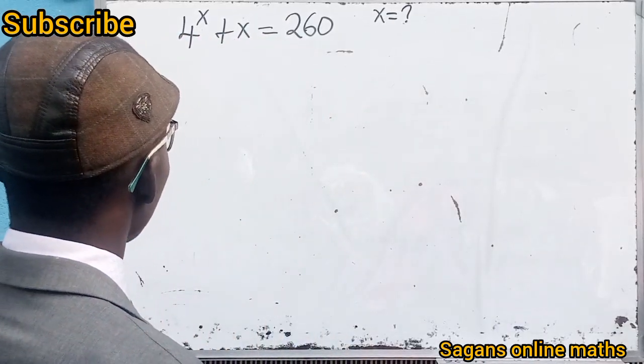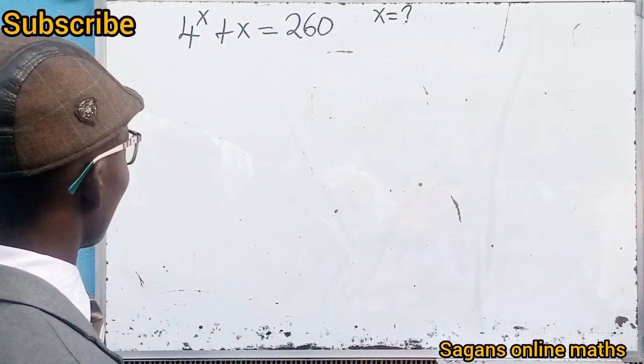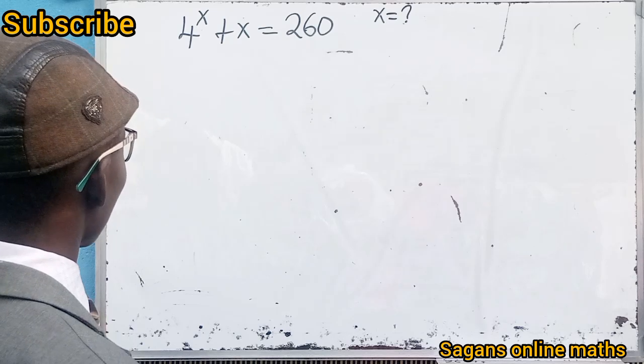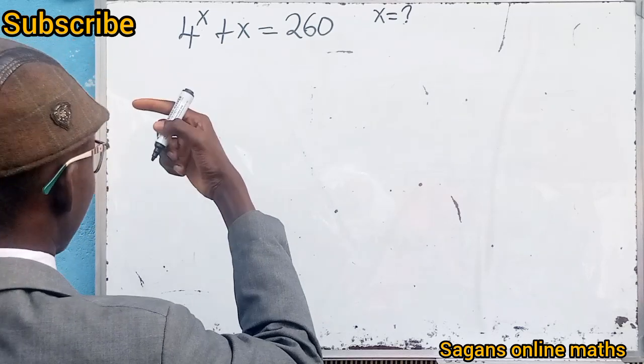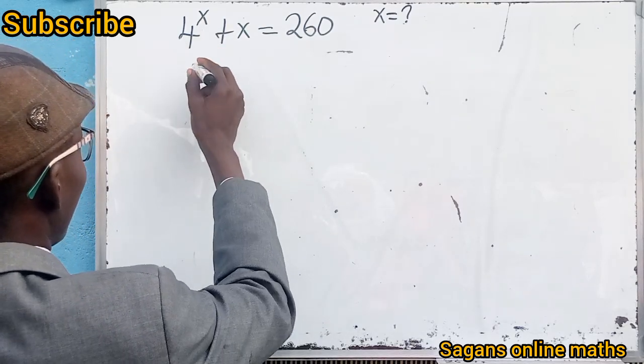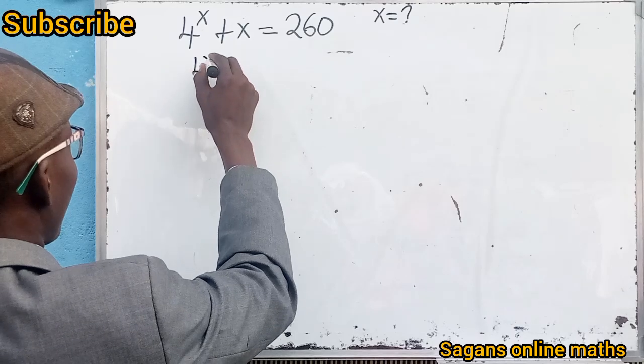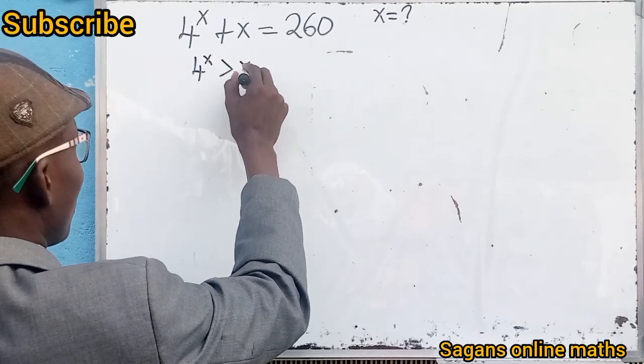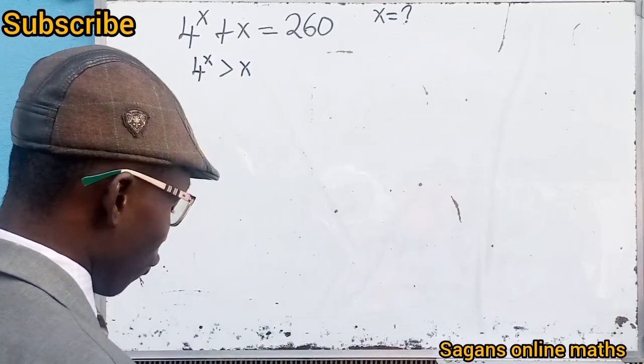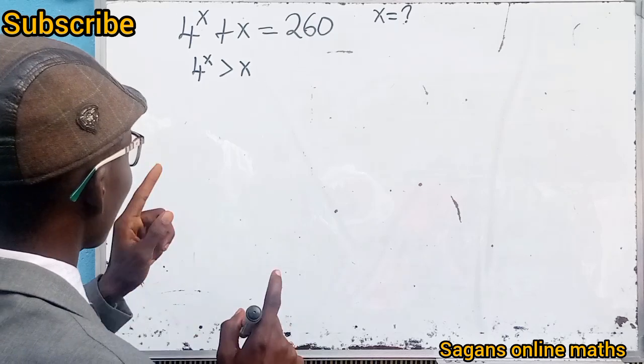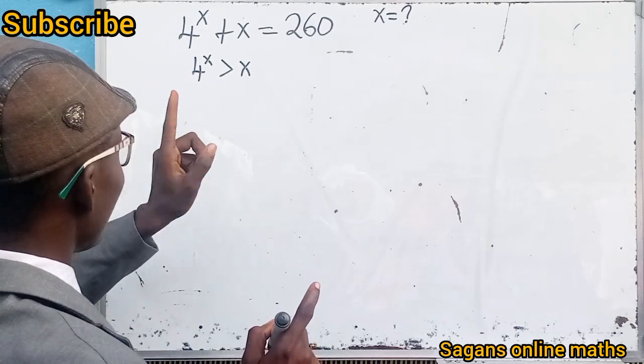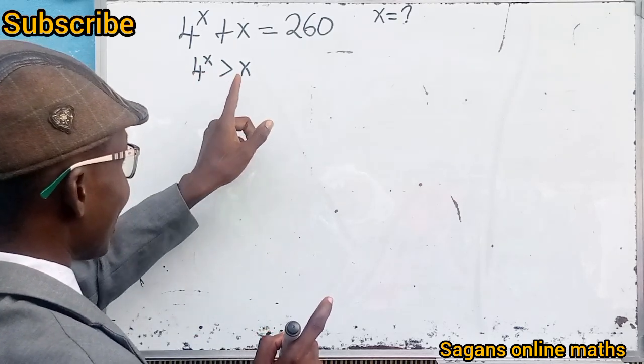I want you to understand something in this video. On this board, I want you to understand that 4 is raised to the power of x. 4 raised to the power of x is greater than x. Please note, it is very important: 4 raised to x will be greater than x. Whatever x is, 4 to the power of that number will be greater than that number.